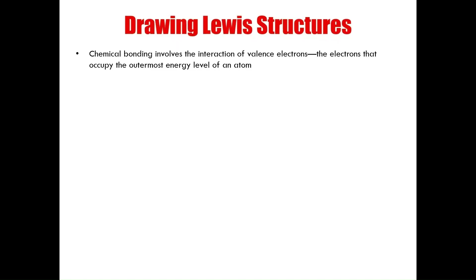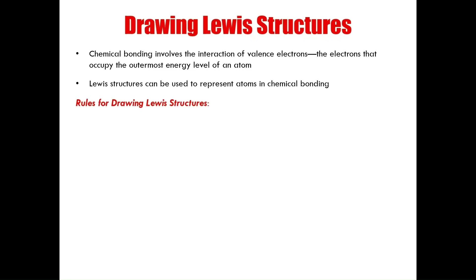Let's begin by discussing why the drawing of Lewis structures is so important. Chemical bonding involves the interaction of valence electrons — these are the electrons that occupy the outermost energy level of an atom. Lewis structures are created to represent the atoms in chemical bonding. There are four specific rules for drawing out Lewis structures, or what we call Lewis dot diagrams.